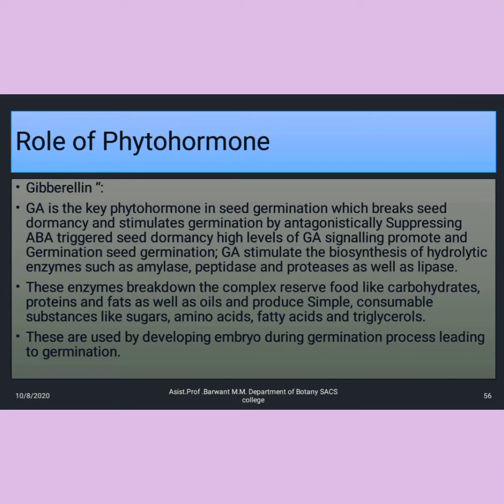Welcome back. In the previous lecture, we have seen what is germination and the types of germination and the metabolic changes during germination. In this lecture, we are going to see the role of phytohormones and the vigor index. Phyto means plant, and a hormone is a chemical secreted in the plant which is responsible for plant growth — that is known as a phytohormone. One of the most important phytohormones is gibberellin (GA).